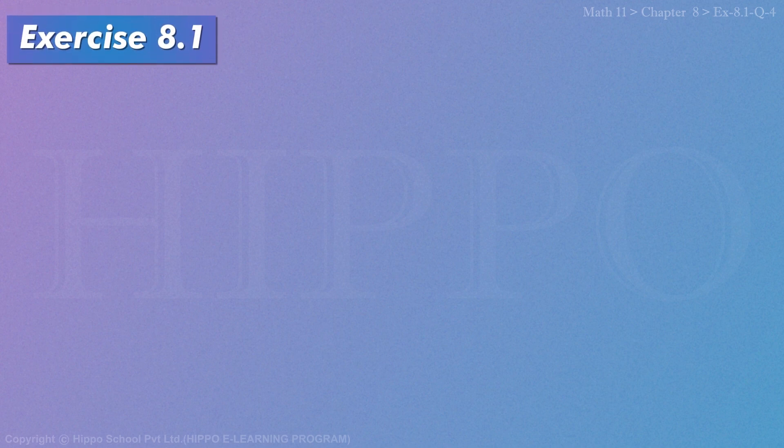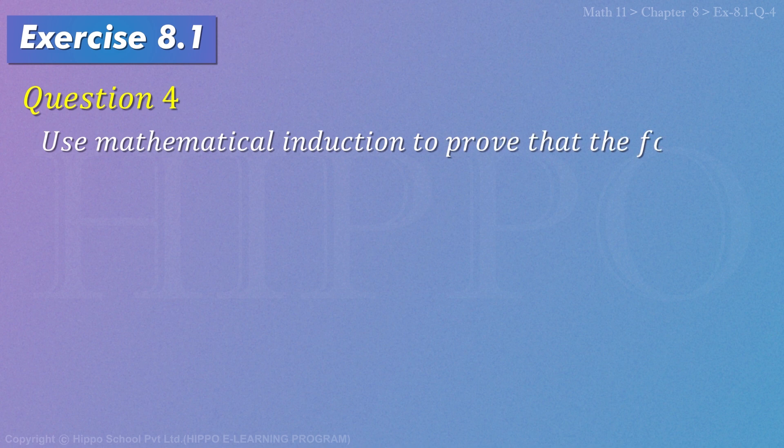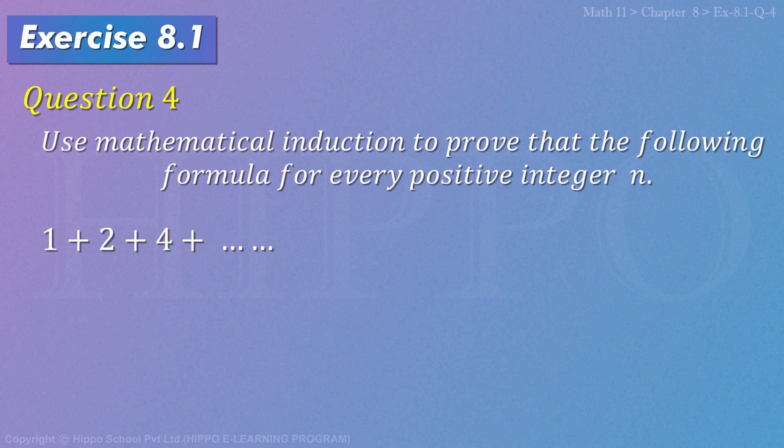Exercise number 8.1, question number 4: Use mathematical induction to prove that the following formula for every positive integer n: 1 + 2 + 4 + ... + 2^(n-1) = 2^n - 1. Solution: